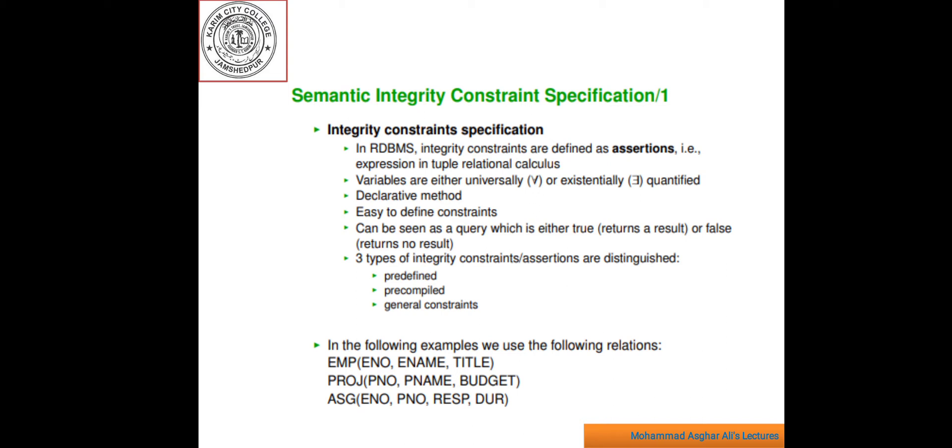Now, we can distinguish between three types of integrity constraint. Number one, predefined. Number two, pre-compiled. Number three, general constraint. Here, example of integrity constraint will be given on the following database.